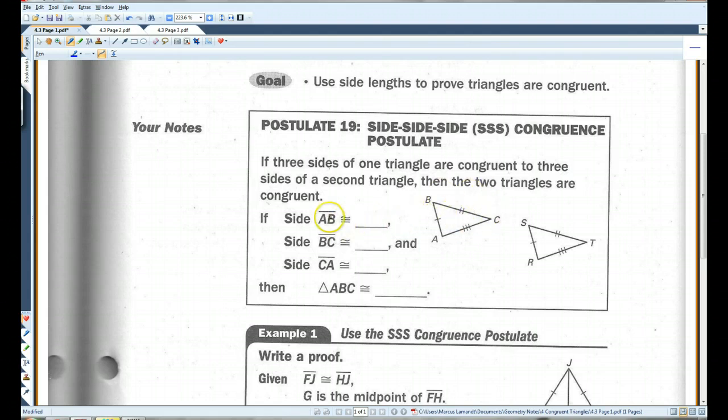For example, in here, if side AB, that's this side here, is congruent to side RS. Side BC is congruent to side ST.